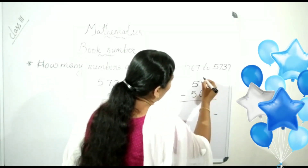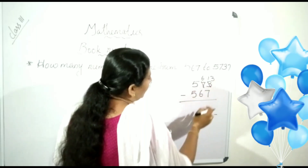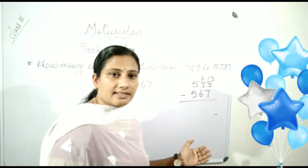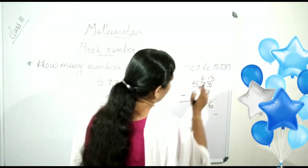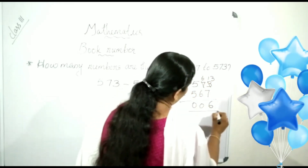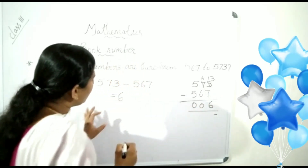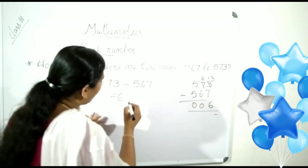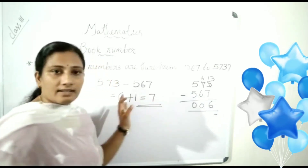Let us take a borrow. When we take a borrow, here is 13. Here is 6. 13 minus 7 — what is the answer? 6 is the answer. Here, 6 minus 6 is 0. 5 minus 5 is 0. So, the answer is 6. One more step: just add 1 with this number. So, the answer is 7.